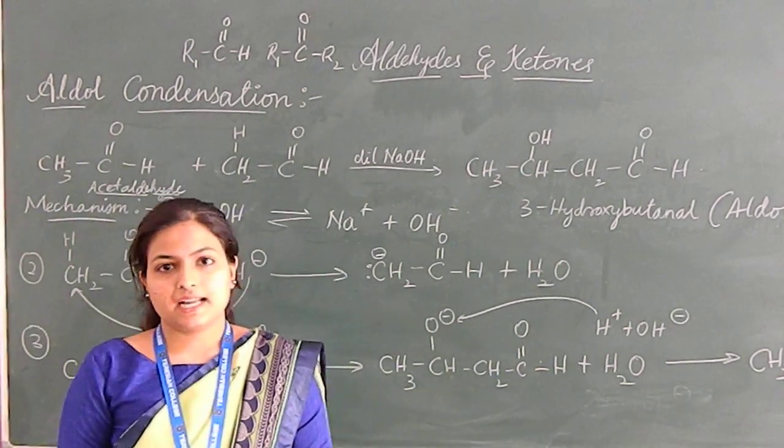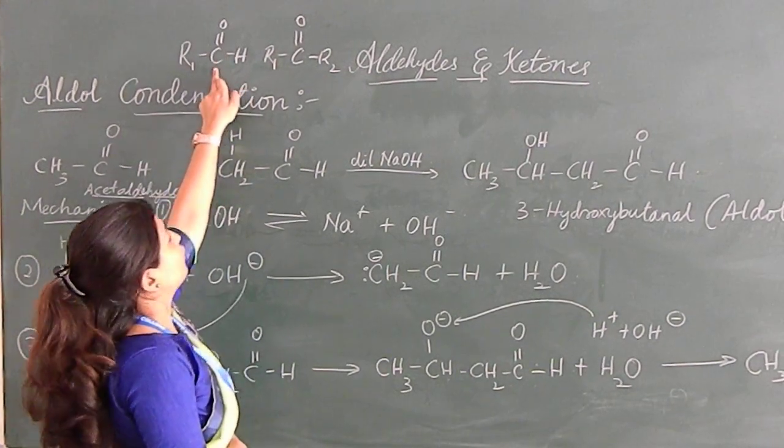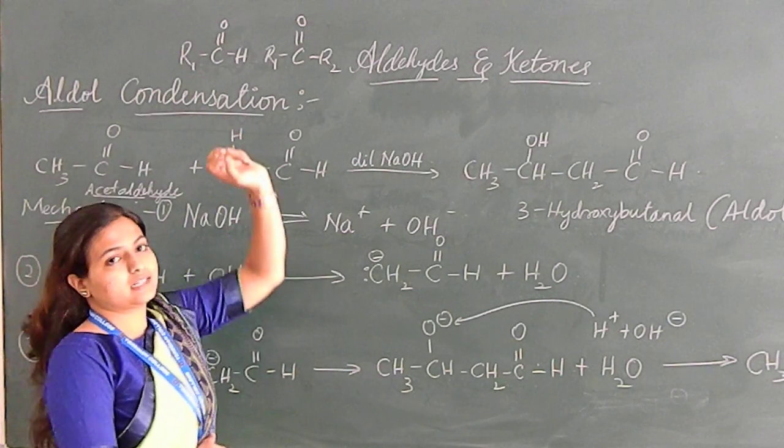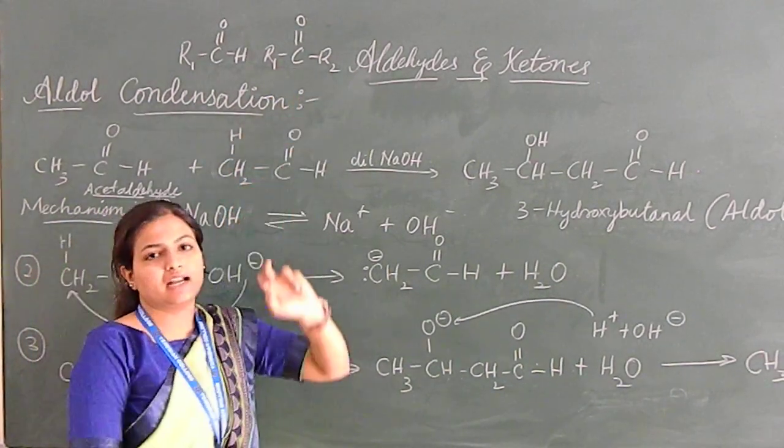The difference between aldehyde and ketone is aldehyde has a C double bond O where C is connected to the hydrogen and the other one is the alkyl group, whereas in ketone both sides we have alkyl groups.